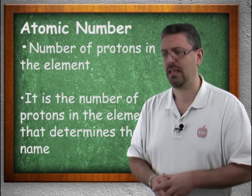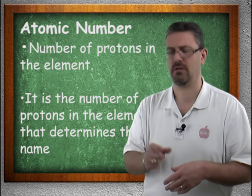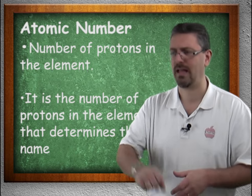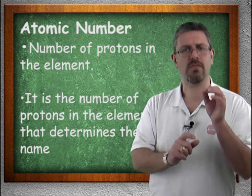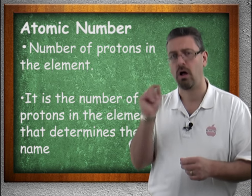So for example, if we have X number of protons, then it equals oxygen. If we have this many protons, it equals carbon. If we have this many protons, we have hydrogen. This many equals helium. The number of protons tells us what the atom is called.